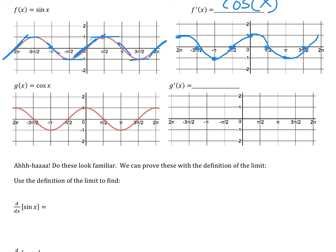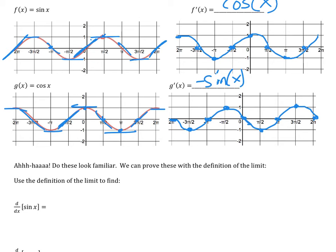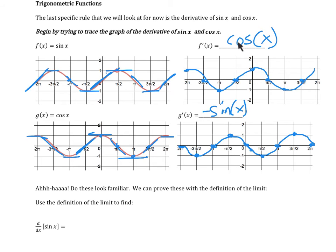For the derivative of cosine: at x equals zero the slope is zero, at pi the slope is zero, at two pi and negative two pi it's zero. At negative pi over two the slope is positive one, at three pi over two it's positive one. At pi over two the slope is negative one, and at negative three pi over two it's also negative one. The resulting graph goes through zero and looks like a sine wave, but it's flipped — so the derivative of cosine is negative sine.